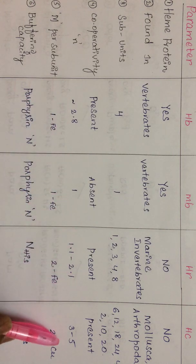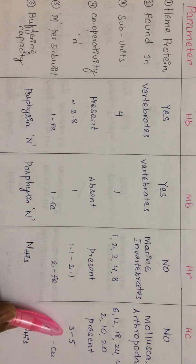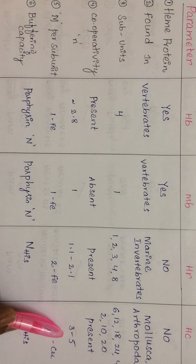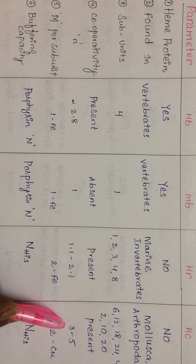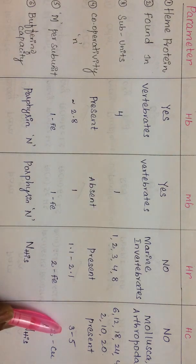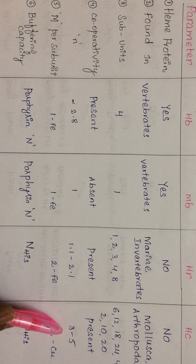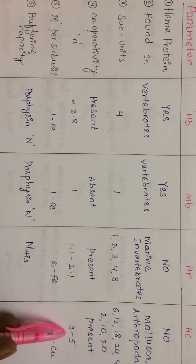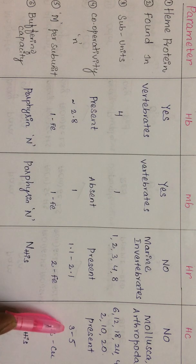For hemocyanin, cooperativity is very high — ranging from three to five. We can understand why: consider a giant octopus that can fill an eight-by-eight room. For oxygen to reach its tentacles, cooperativity must be very high so the blood can supply the required amount of oxygen. Therefore, hemocyanin shows a very high degree of cooperativity.